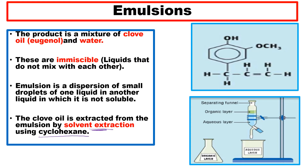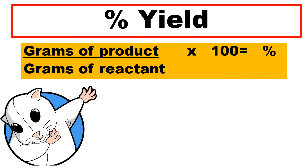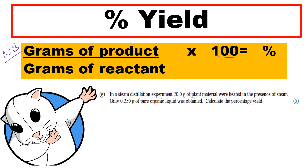Cyclohexane, an organic solvent, is used for the extraction. This is the structure of eugenol, your clove oil. You'll be asked to calculate the percentage yield using the formula: grams of product divided by grams of reactant given, multiplied by 100.